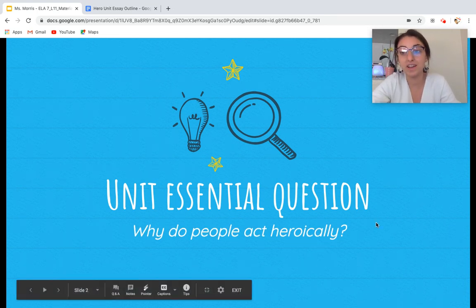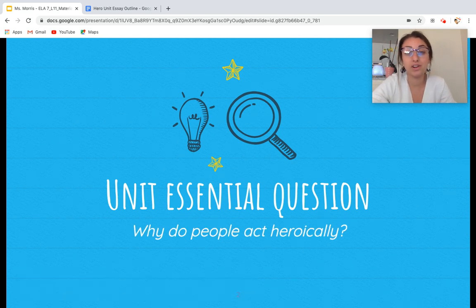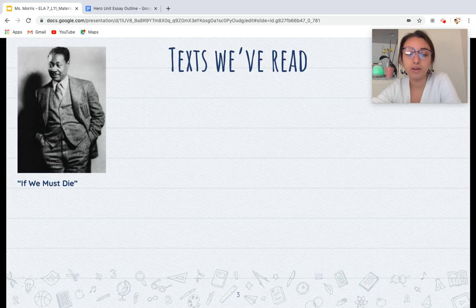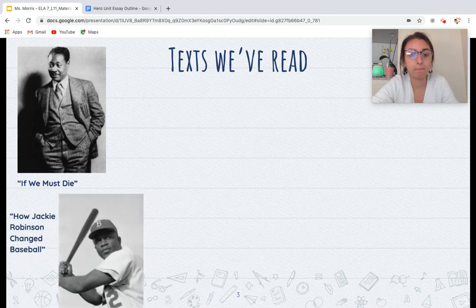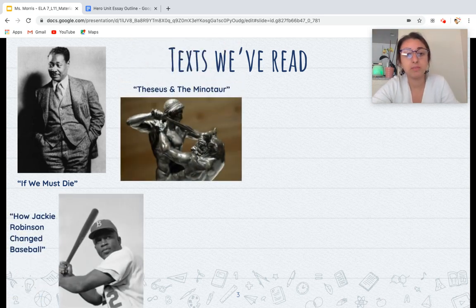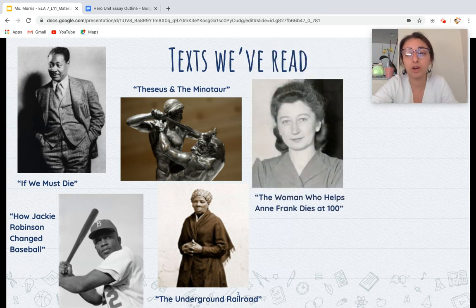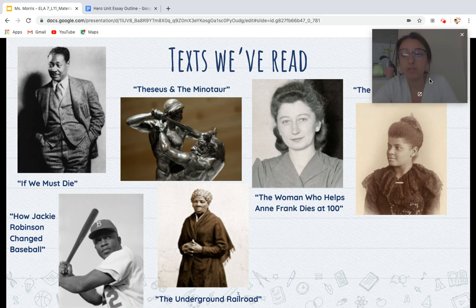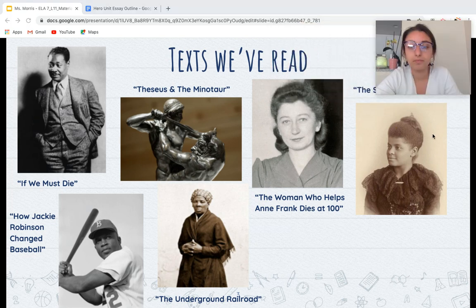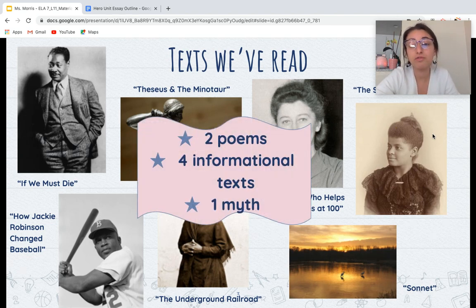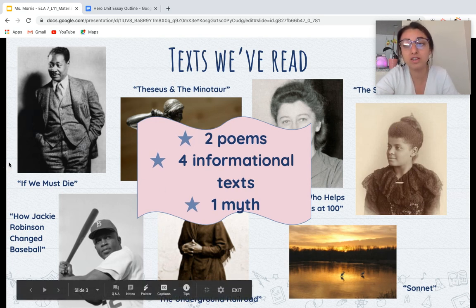That's the question we've been trying to answer in our graphic organizers, in our readings, in our assessment questions. So we're going to continue to answer that question during our assessment. The texts we've read so far: If We Must Die, How Jackie Robinson Changed Baseball, Theseus and the Minotaur, The Underground Railroad, The Woman Who Helps Anne Frank Dies at 100, The Story of Ida B. Wells, and Sonnet. That is two poems, four informational texts, and one myth — the myth was Theseus and the Minotaur.